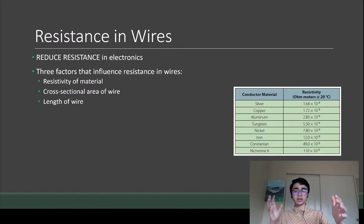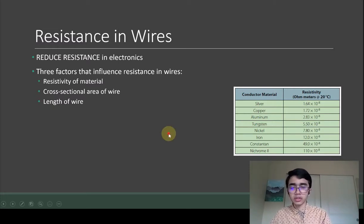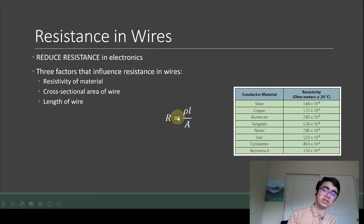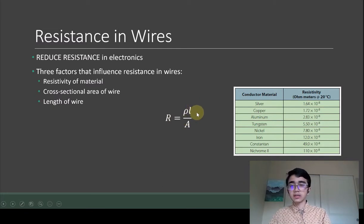For those who are more mathematically minded, here's the equation that determines resistance in wires. Resistance is rho, which is resistivity, times length, all over area. You can see that as you increase the cross-sectional area, the resistance decreases.